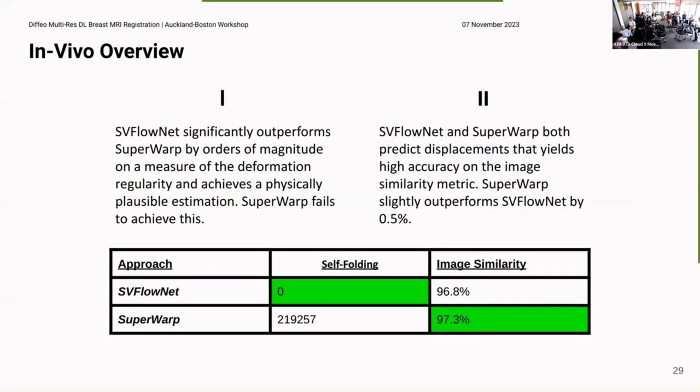And so as a snapshot of the in vivo results, we have SVFlowNet significantly outperforming in terms of self-folding, and you get comparable results on the similarity.